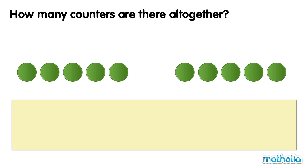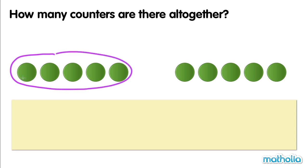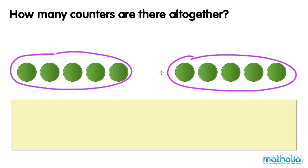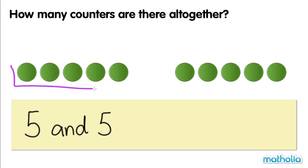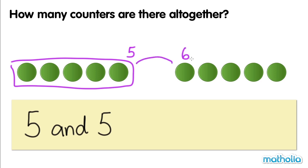How many counters are there altogether? There are five counters and another five counters. Five and five — let's add by counting on: five, six, seven, eight, nine and ten. There are ten counters altogether. Five and five make ten.